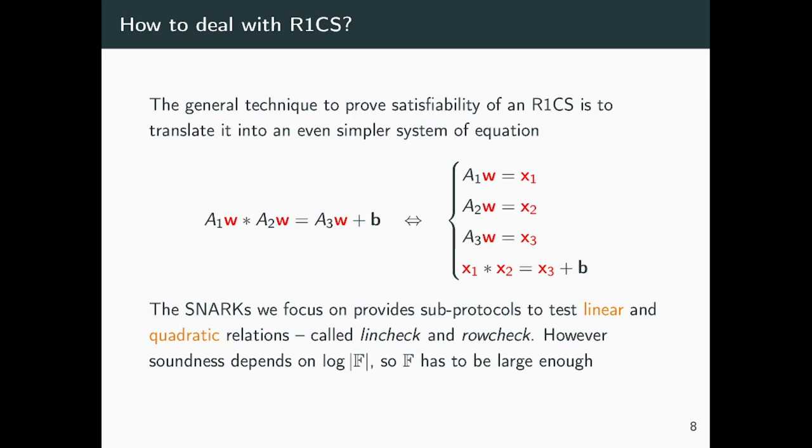The main blueprint that all the SNARKs presented so far essentially follow is to prove satisfiability of the system in the right hand side, in a commit-and-prove fashion, by providing some sort of commitments to W and X1, X2 and X3, and proving that all these linear relations or quadratic equations hold, through protocols that are called Lincheck or Rowcheck.